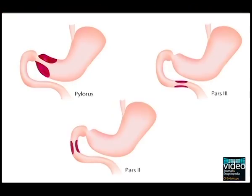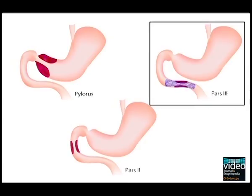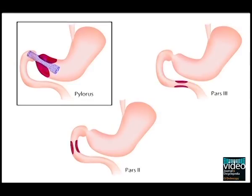Although gastric outlet obstruction occurs at various locations, three main types of obstruction are shown in this schema. For obstruction at the third duodenum, the stent can be placed almost straight. The stent also can be placed in the same manner for pyloric obstruction.